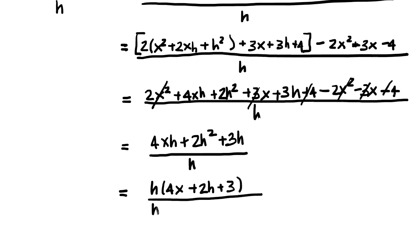I'm going to put the h over here because it's very clear now that h divided by h is just 1. So my last and final thing I'm going to write down is 4x + 2h + 3. And that is my final answer without the denominator.